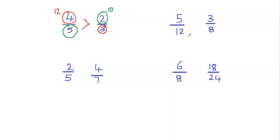Let's take a look at the next example. Again, we're going to do the same thing — multiply the bottom number of one fraction with the top number of the other fraction. So we're going to multiply 12 by 3. 12 times 3 would be 36, so I would put 36 next to the numerator that I multiplied.